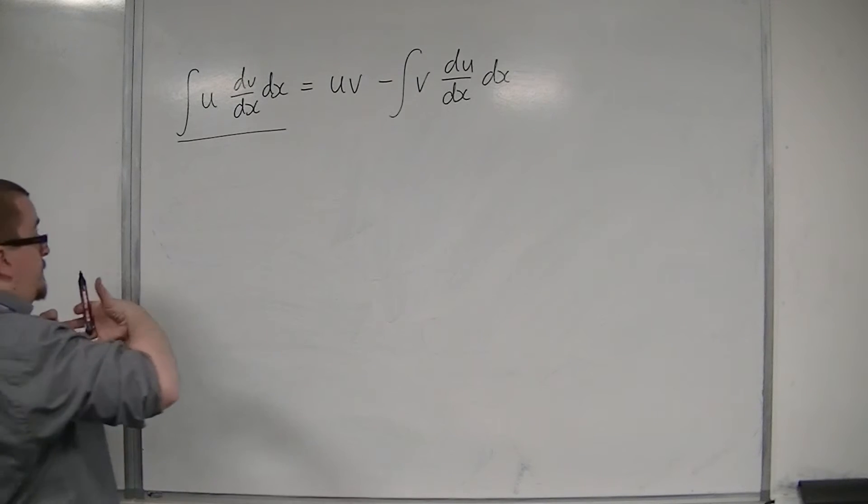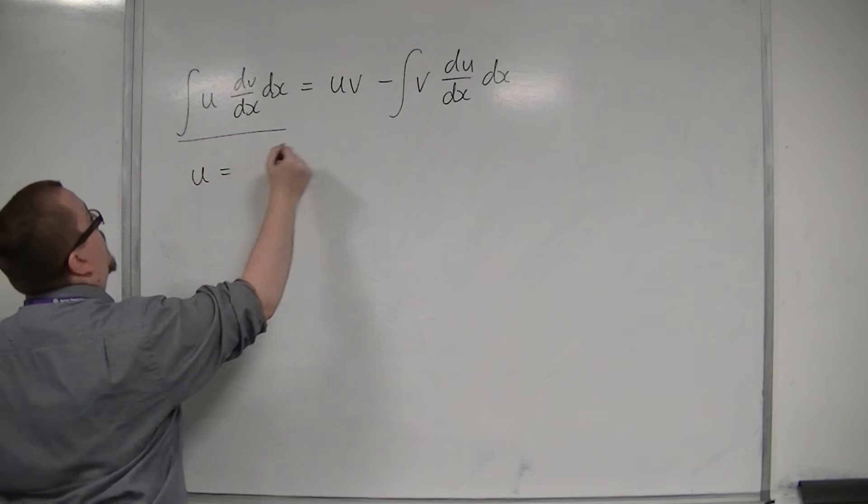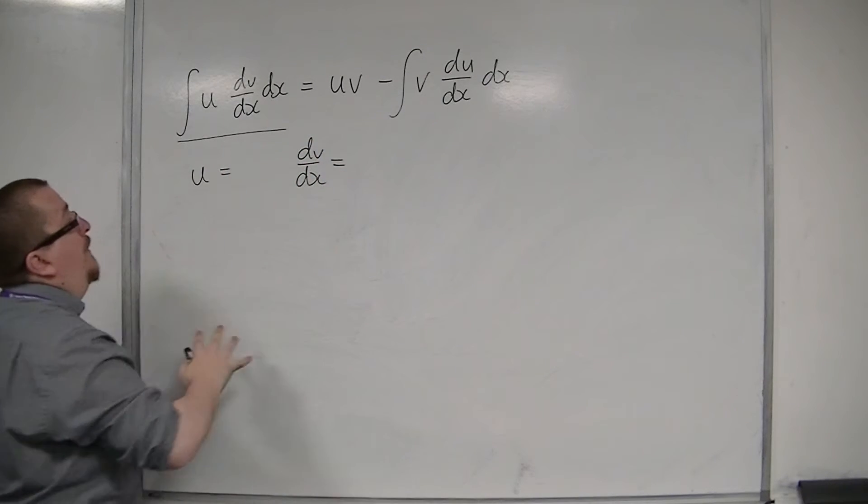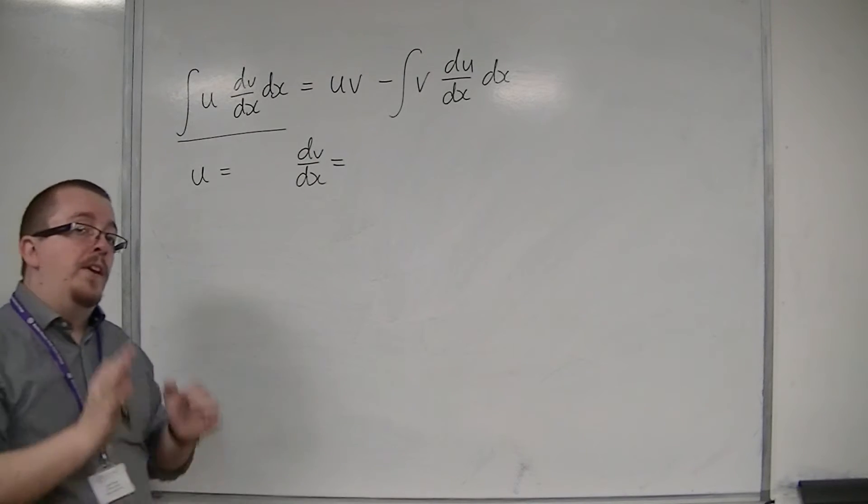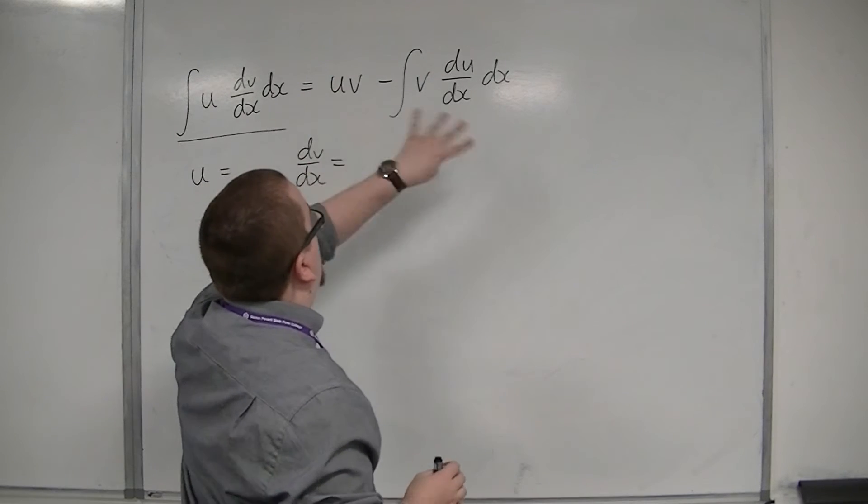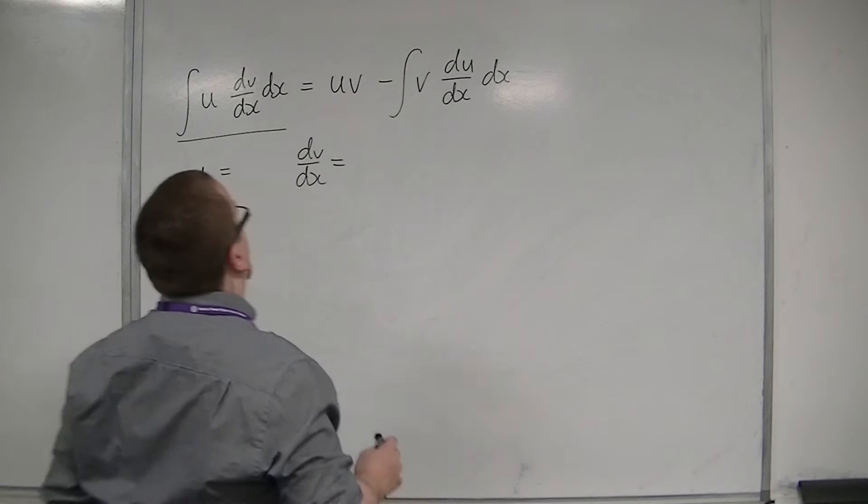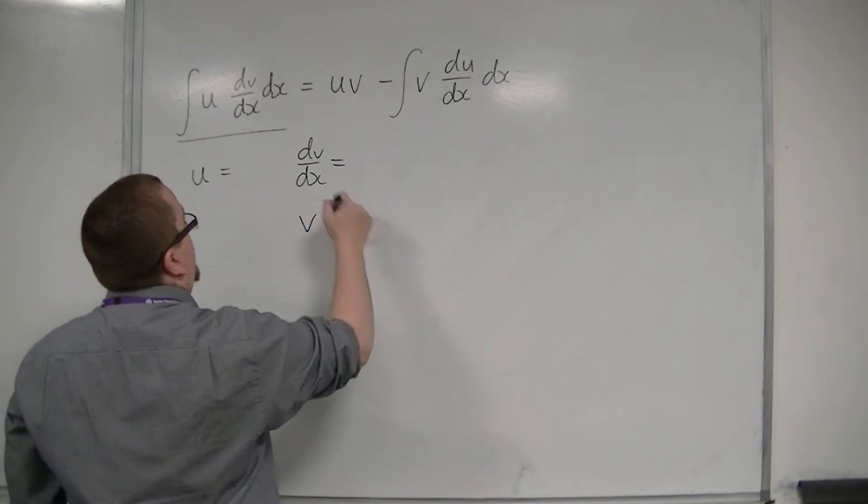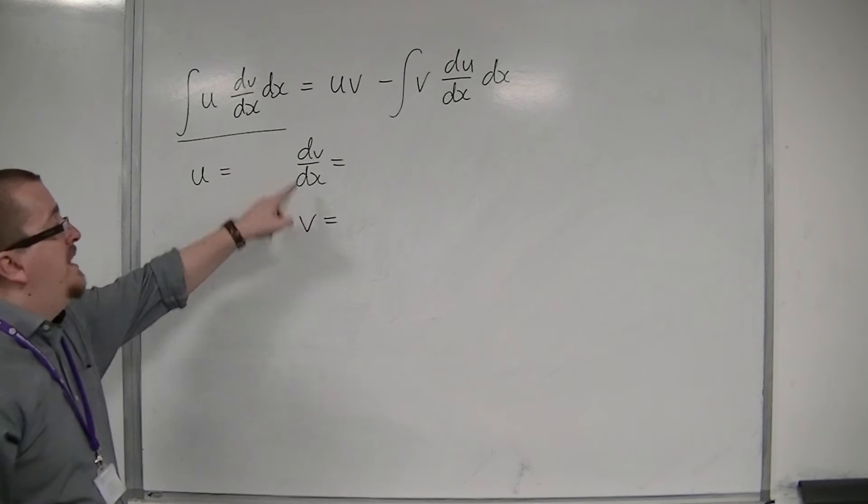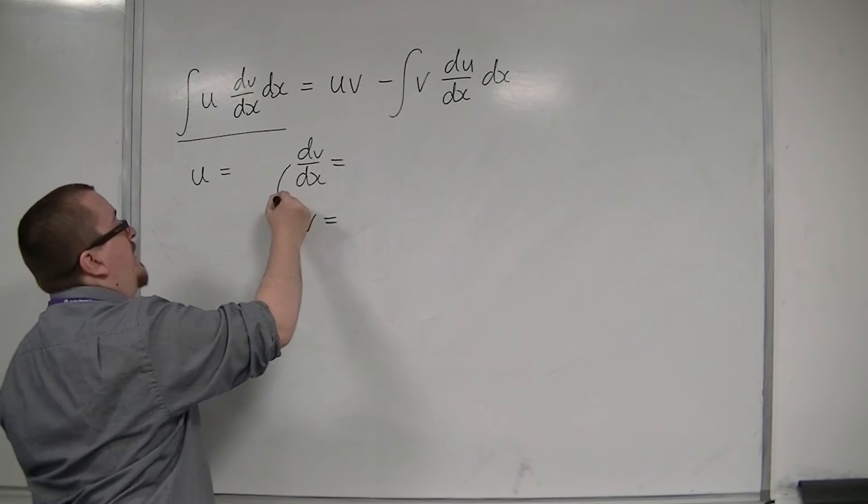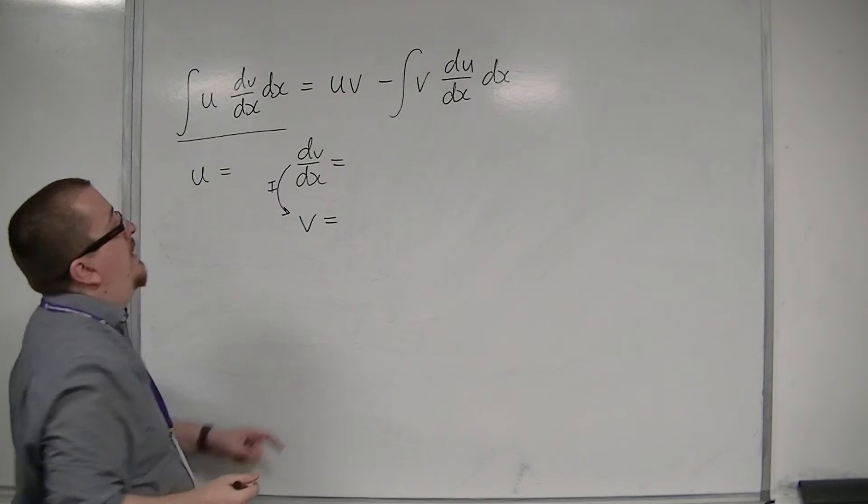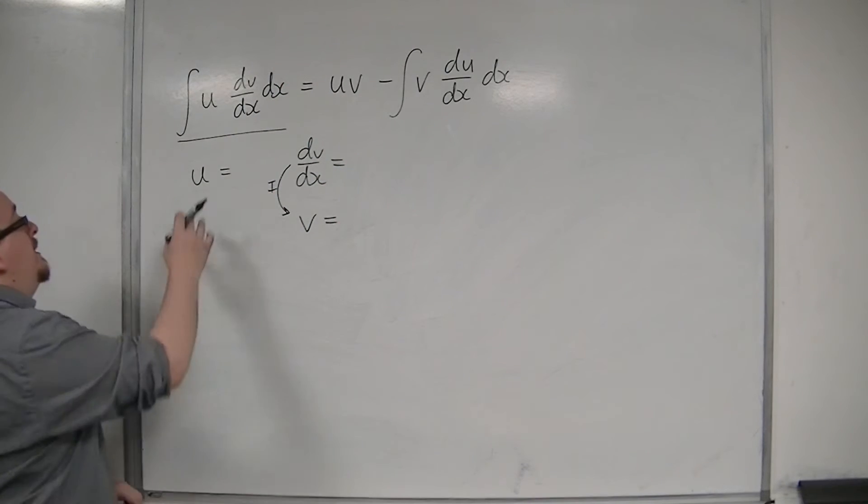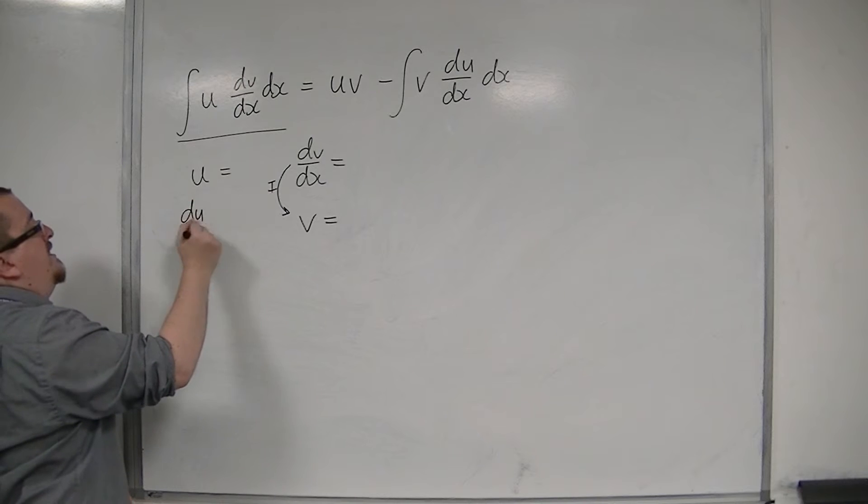So, once you've identified what u is and what dv by dx is, then we can find the remaining parts that are in the right-hand side of the equation. So, we can see that there is a v. And if I had dv by dx, I'd be able to integrate to get to v. And I also see that I've got a du by dx. So, I'd be able to differentiate u to get to du by dx.